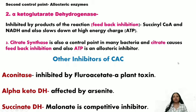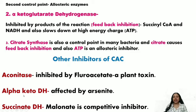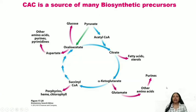There are also other inhibitors of the citric acid cycle: aconitase is inhibited by fluoroacetate, a plant toxin; alpha-ketoglutarate dehydrogenase is also affected by arsenide; and succinate dehydrogenase is competitively inhibited by malonate. This concludes the regulation of the citric acid cycle.